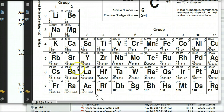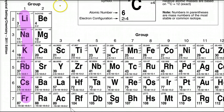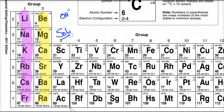Looking at the periodic table, we can see the group one elements — the alkali metals — and the group two elements — the alkaline earth metals. These become +1 and +2 ions by losing one or two electrons to become stable. When bonded with a hydroxide, they are strong bases because they are soluble.